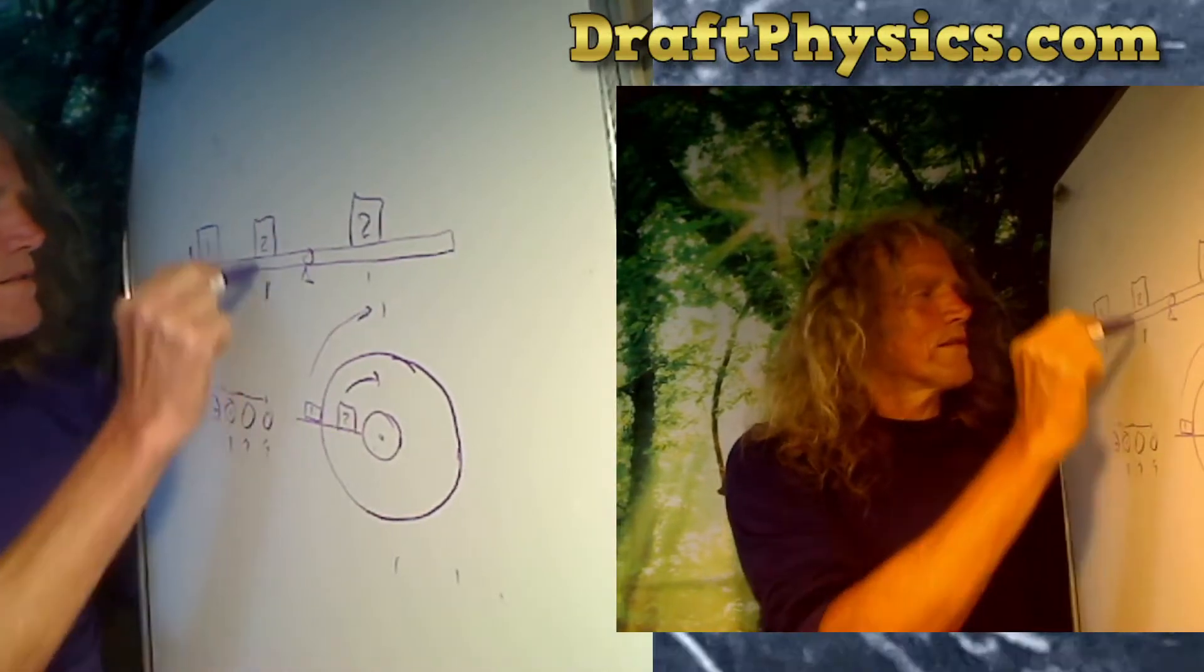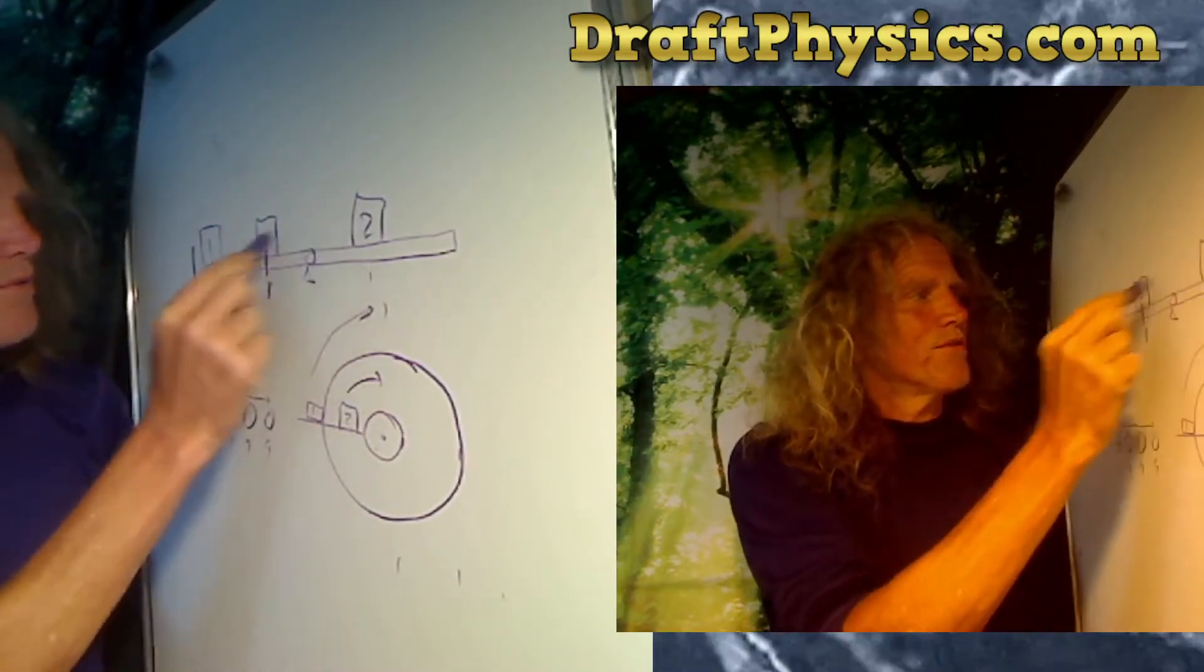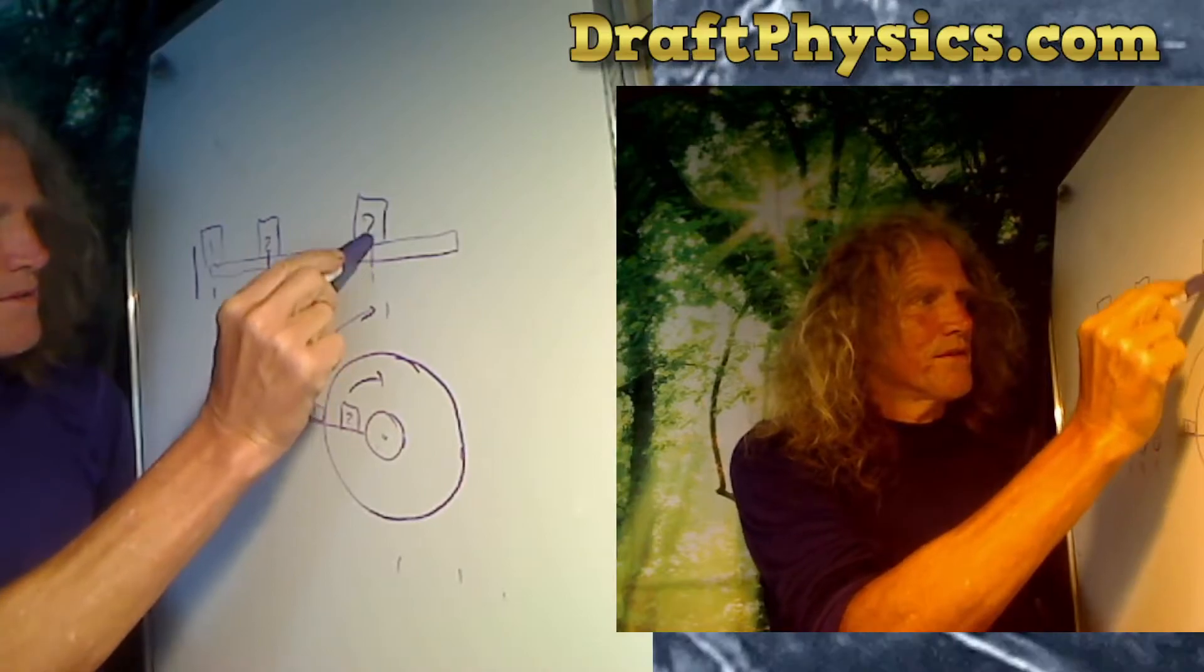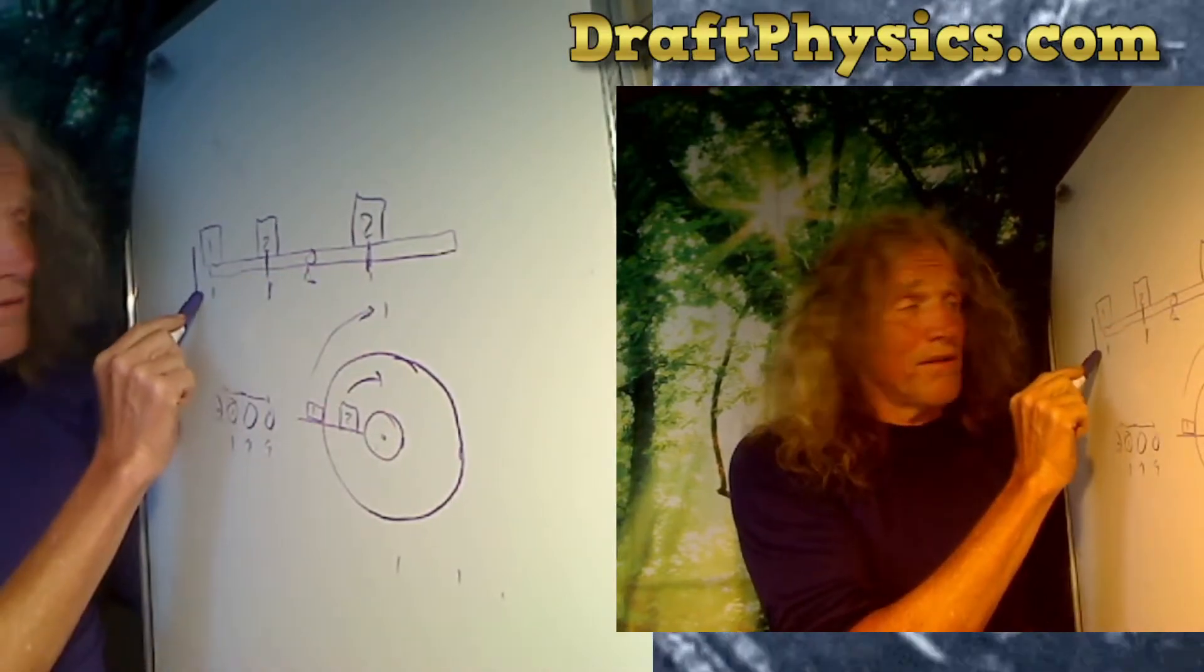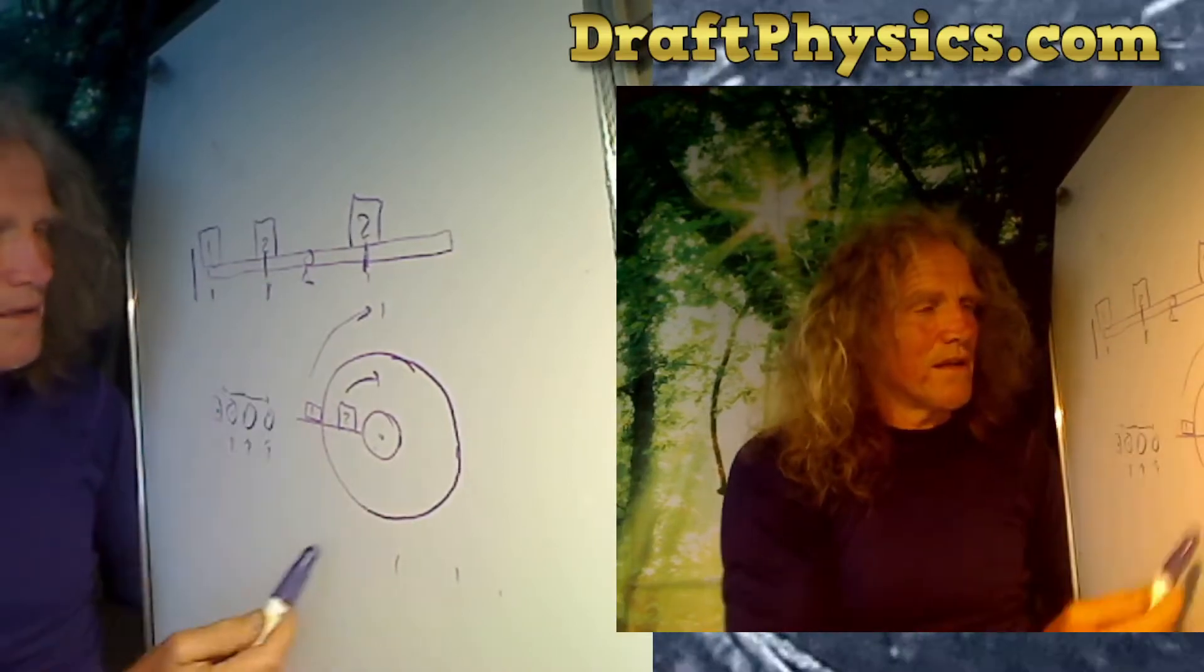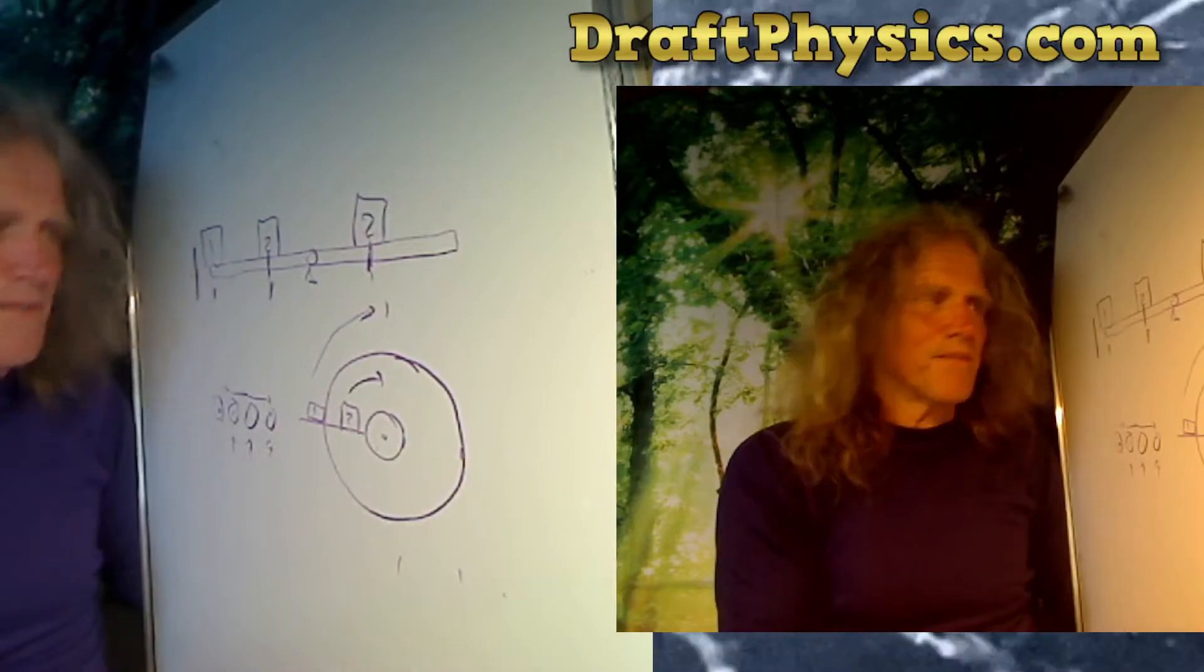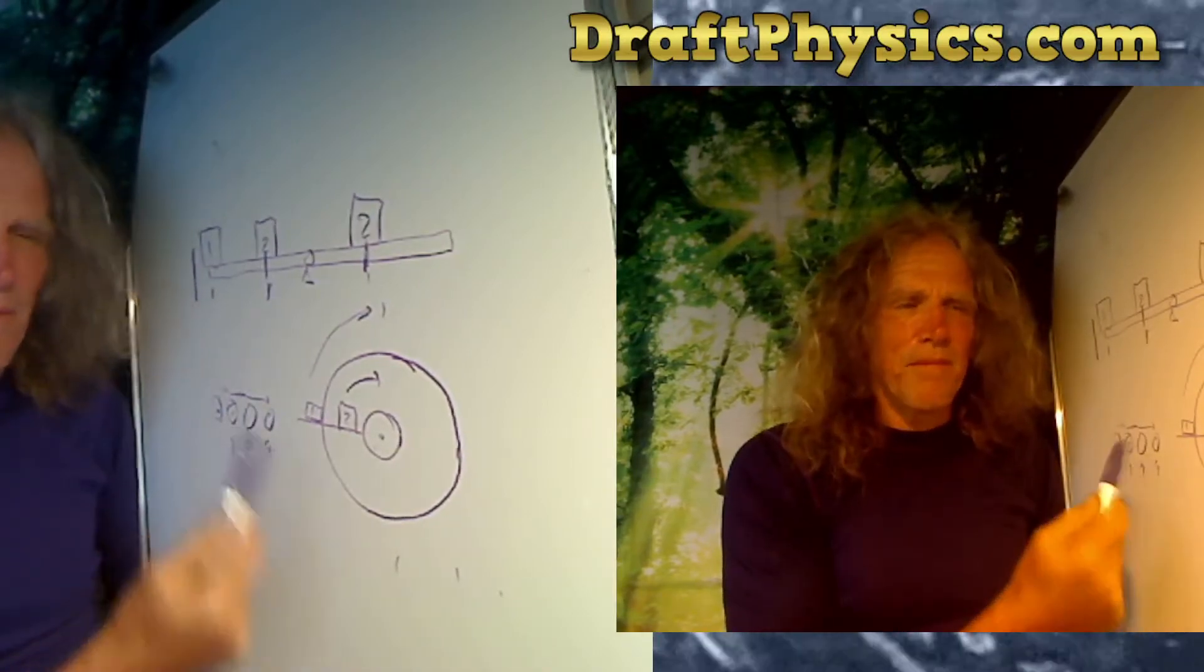The idea is this moves twice the distance that this moves in the same amount of time. Where the two and the two are equal distances, the one and the two outside further would be twice the distance and therefore twice the energy.